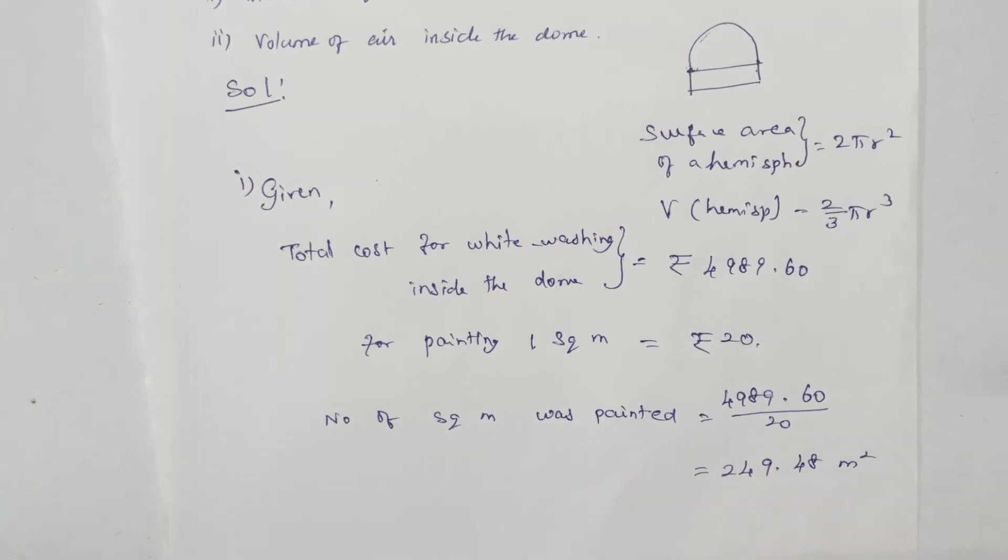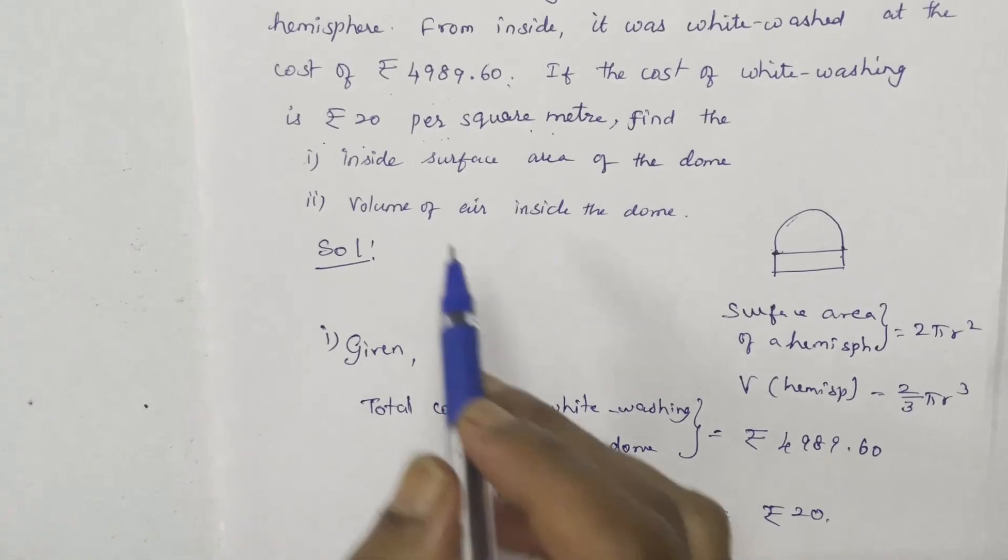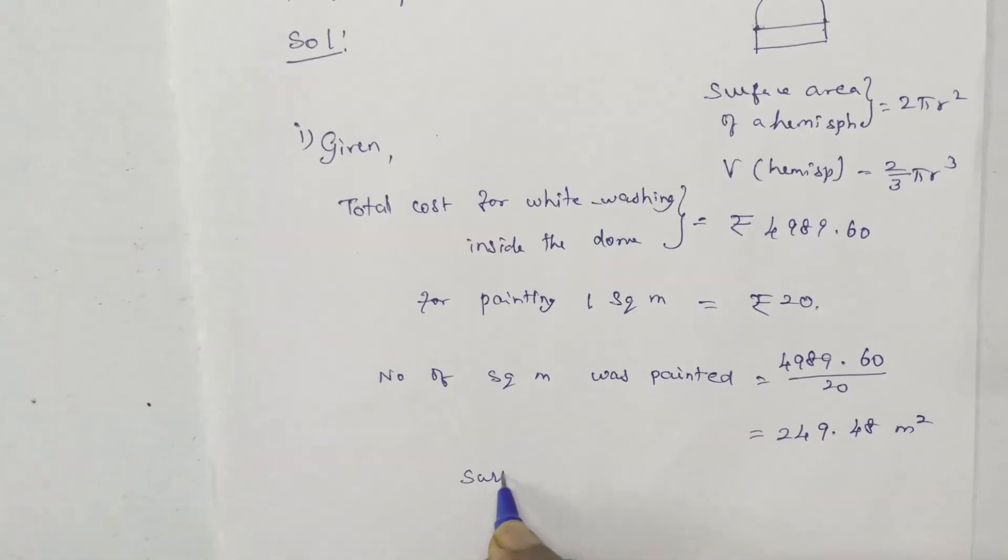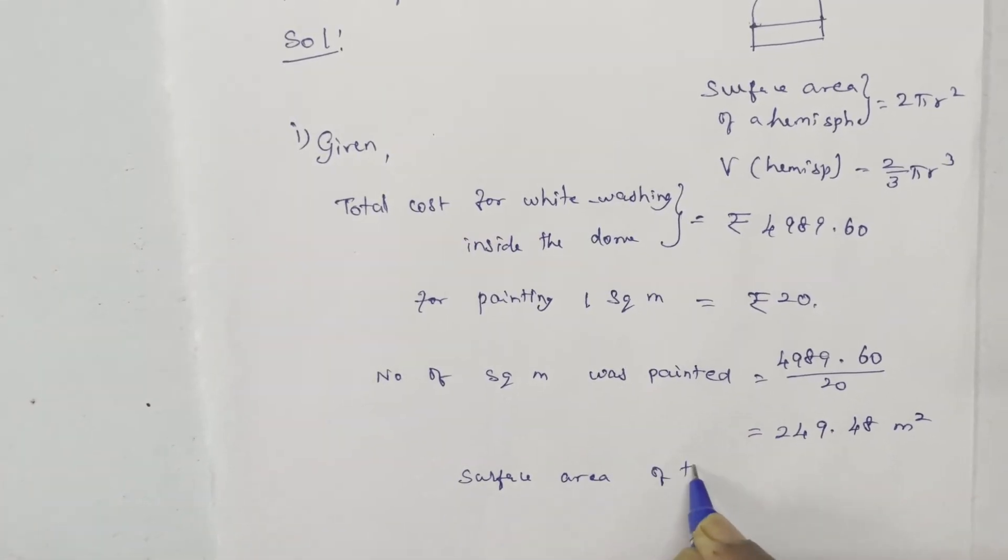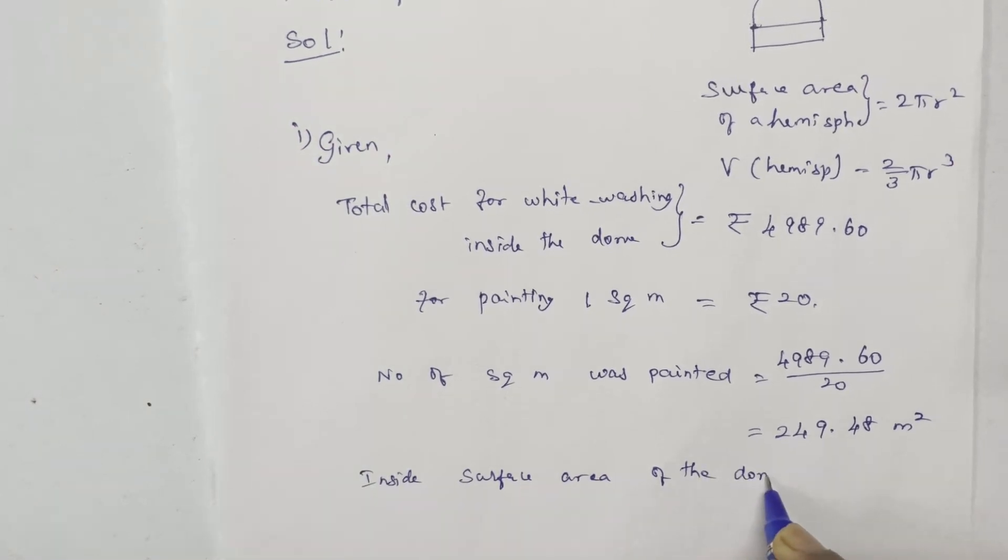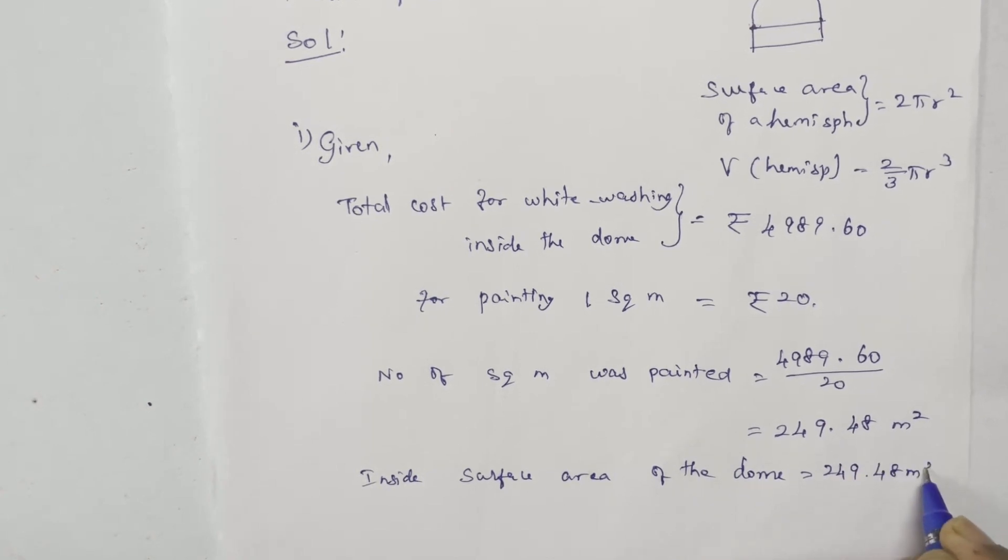This gives 249.48 meters squared. This is the inside surface area of the dome.